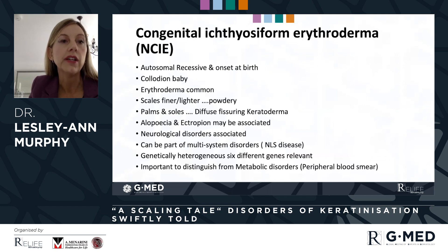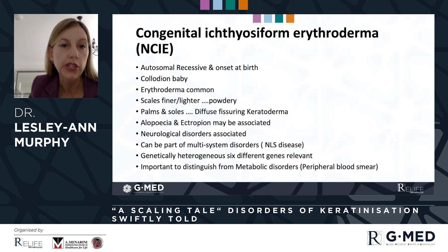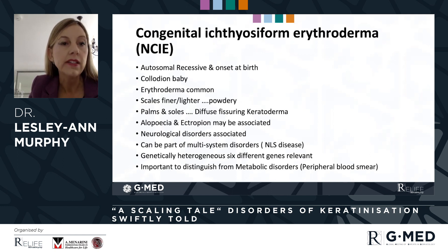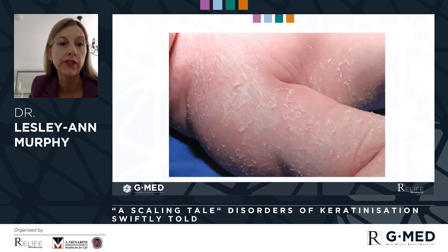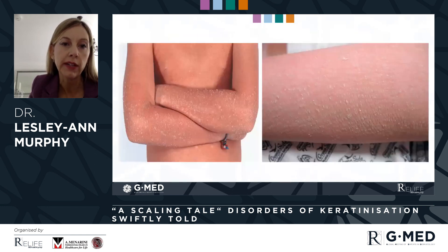Ichthyosiform erythroderma is inherited autosomally recessively, has its onset at birth, again presents with collodion baby, and erythroderma is substantially more commonplace. The scales are finer and lighter — considered almost powdery or feathery — and palms and soles are affected with diffuse fissuring keratoderma. Alopecia and ectropion, although associated to a much lesser extent contrasting with lamellar ichthyosis, and neurological disorders can also be associated. It is extremely important to consider that this may be part of a multisystem disorder — neutral lipid storage disease being an example — and important to identify on peripheral blood smear, where there may be a role to influence the outcome of disease with dietary modification. These are the very characteristic slides with this light feathery adherent scale, very different to the previously shown lamellar ichthyosis, and again the extent of erythroderma in the backdrop.